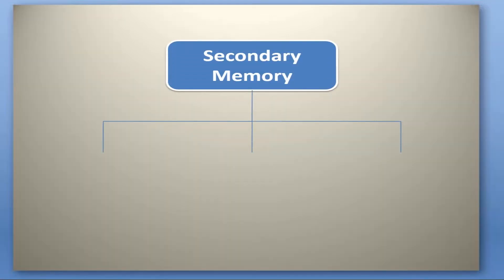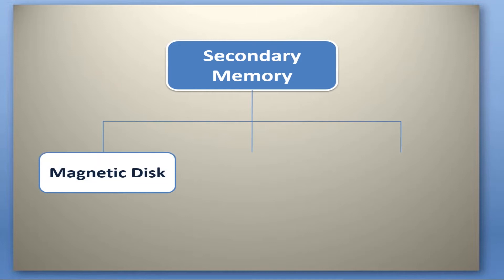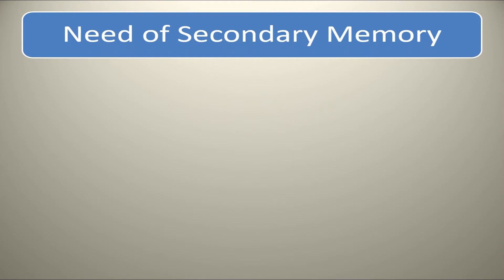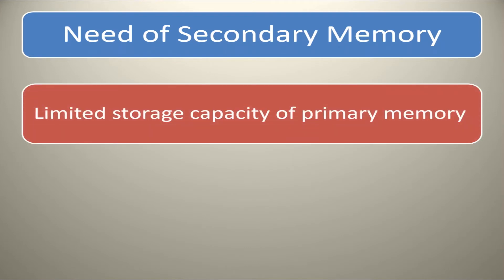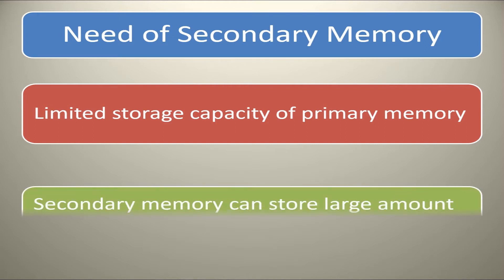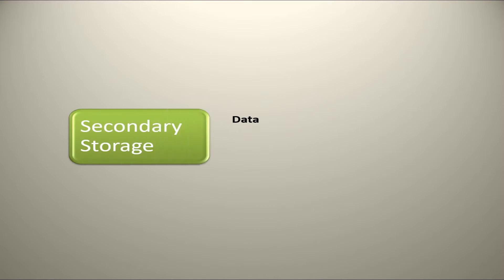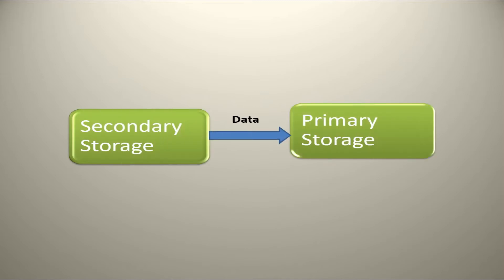Types of secondary memory are magnetic disk, optical disk, and flash memory. As primary memory is volatile memory having a limited storage capacity, it is normally not sufficient to accommodate all the data. Therefore, secondary storage medium is used to store large volumes of data. The data stored on secondary storage is transferred to the primary storage as and when required.